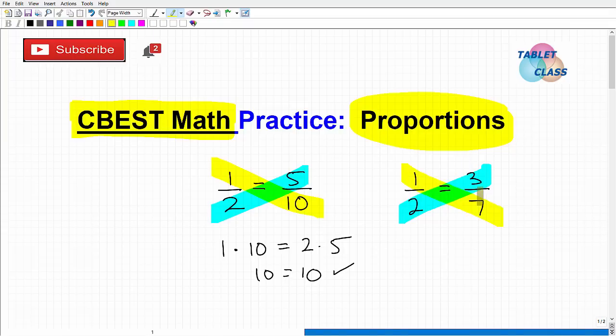The way you would answer this is the following: you would look at the cross product. The cross product is going to be able to determine whether these are in fact two equal fractions. So 1 times 7, is that equal to 2 times 3? We see it's not, right? 7 is not equal to 6.